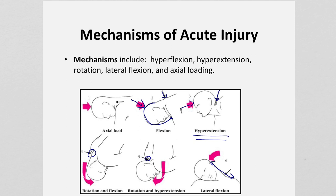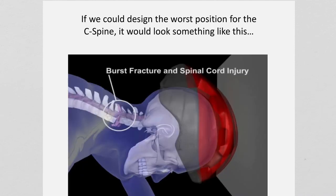These are the different mechanisms, illustrating just how complex an acute cervical spine injury can be. Because the cervical spine has so much range of motion, there are multiple ways it can be injured. Looking at this image of an athlete butting their head against a wall — if we could design the worst position for the cervical spine, this would be it: an axial load on top of the skull with a slight extension or flexion moment, directing force centrally and resulting in a burst fracture or spinal cord injury, or both.